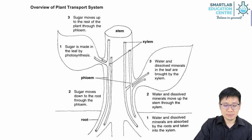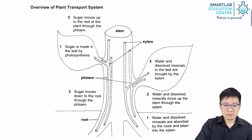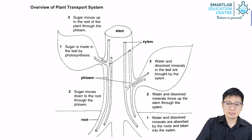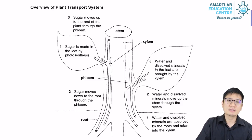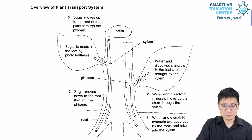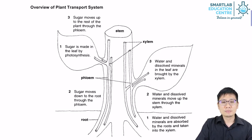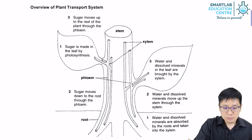Here we have an overview of the plant transport system. We're going to split this picture into the left and the right side and discuss them separately. The vascular bundles are bundles of vessels — there are two kinds: phloem and xylem. The phloem transports food or manufactured food substances, mostly sugars and amino acids. The xylem transports water and dissolved mineral ions.